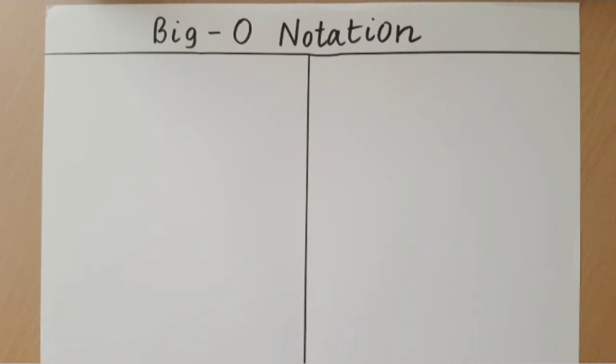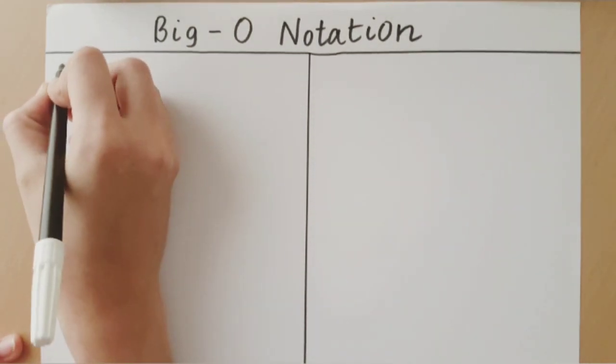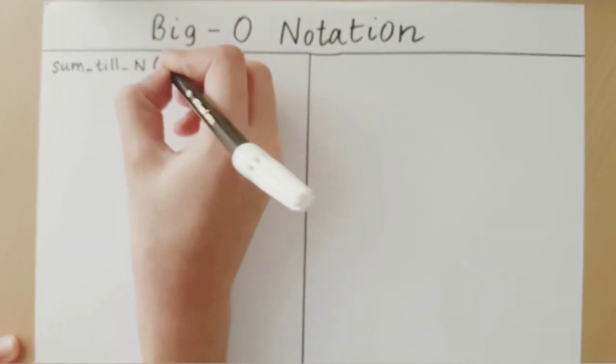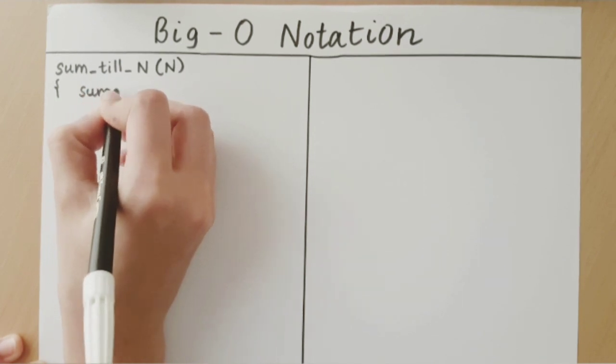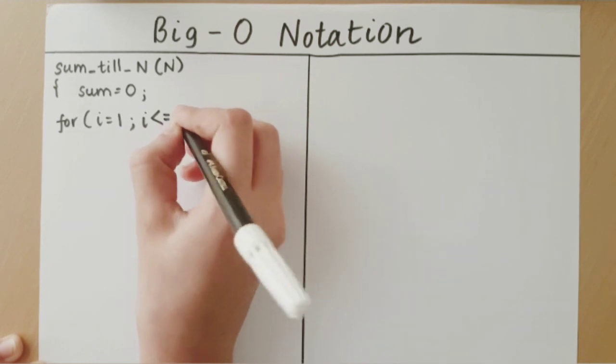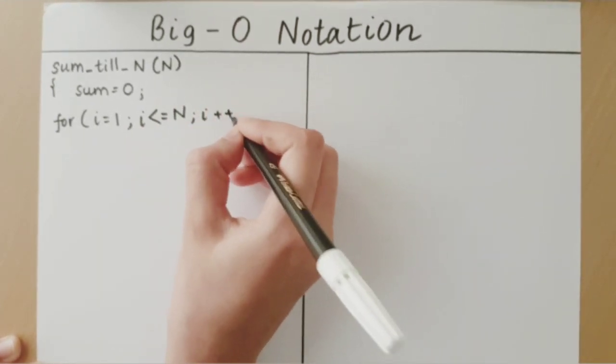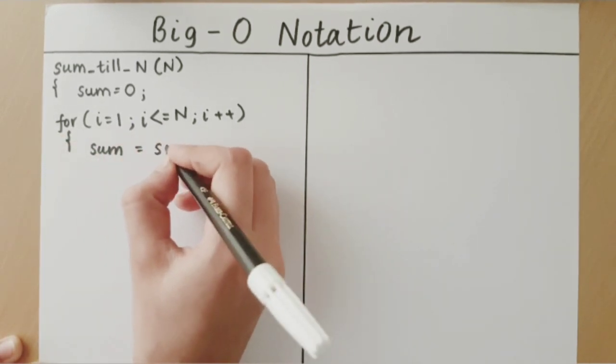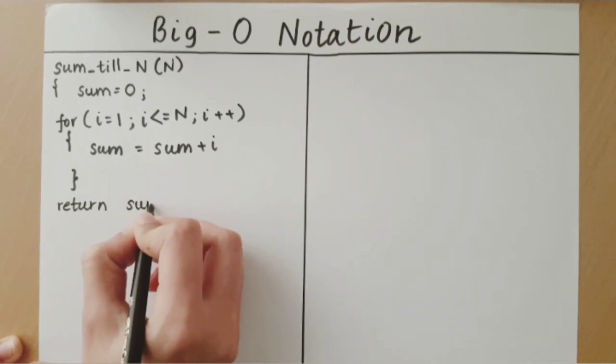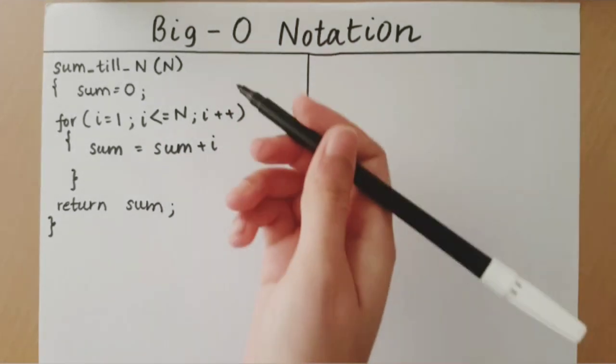So let us recap what we did previously. We had an algorithm which took a value n and calculated the sum from 1 until that number n. So I'm going to rewrite the algorithm which we have already discussed previously. This is the algorithm which we have previously discussed.